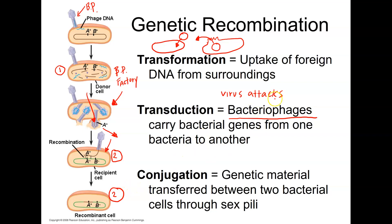Bacteriophages serve as the vector or vessel through which this DNA exchange occurs. The next type of genetic recombination in bacteria is called conjugation, where one bacterium transfers DNA through a sex pilus to another bacterium.